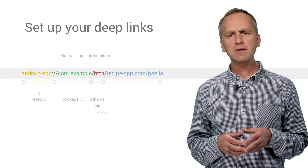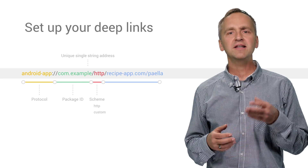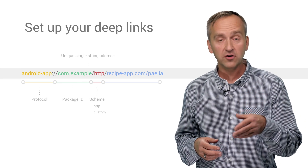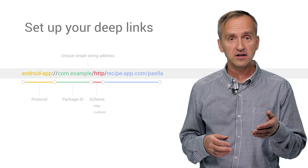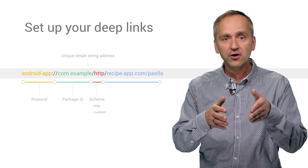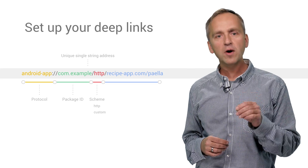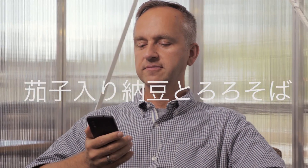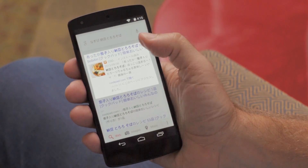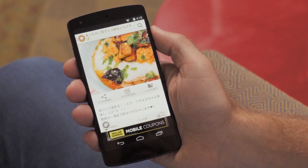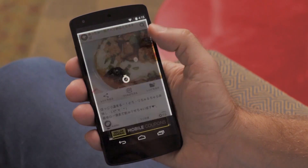What are deep links? Think about them as a way to identify a specific piece of content or functionality inside of your mobile application, much like web URLs, but for apps. When your app supports deep linking, you can get it into the Google index by using app indexing.